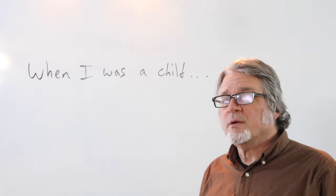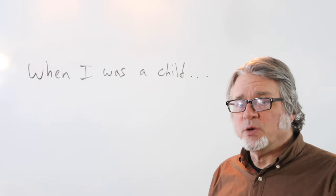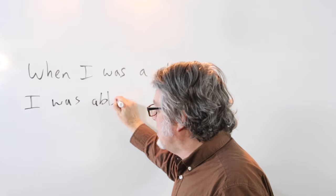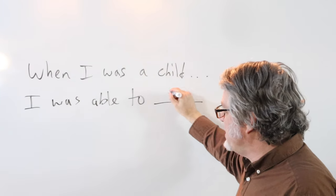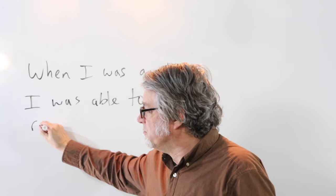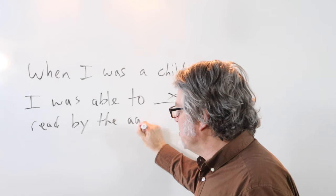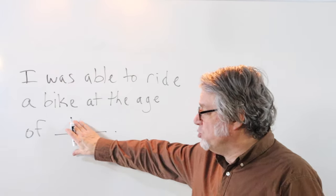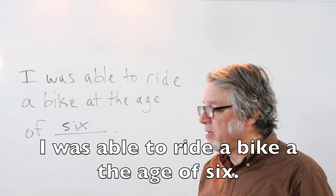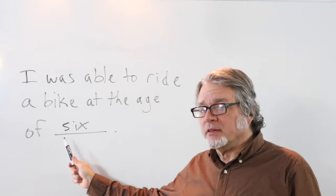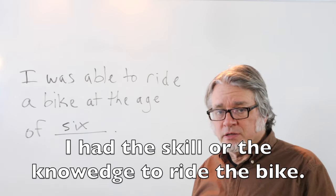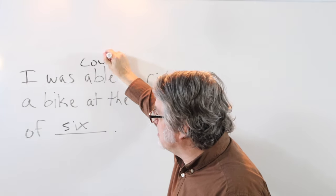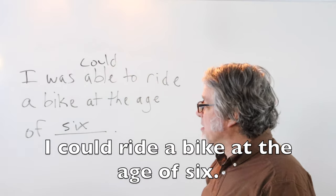You can use able to to talk about things that you did in the past — things that you were able to do as a child. For example: 'When I was a child, I was able to read by the age of four,' or 'I was able to ride a bike at the age of six.' When you say something like this, it means you had the skill or knowledge to do it. If you change be able to to could, that is also a good choice: 'I could ride a bike at the age of six.' Remember that could is the past tense of can, and was able to and could are interchangeable here.